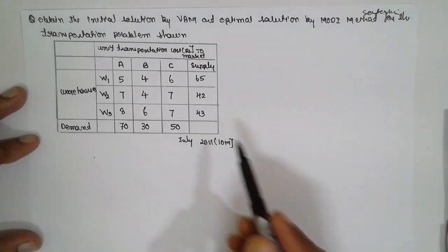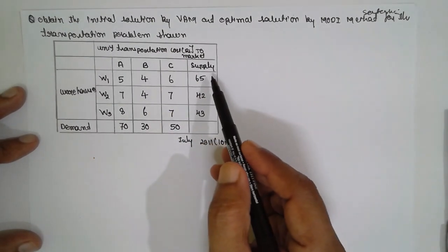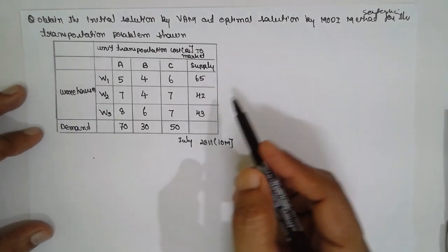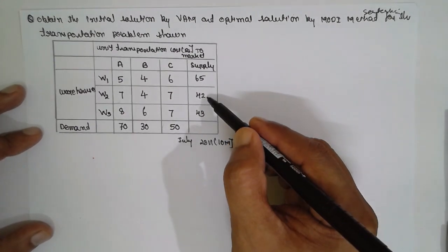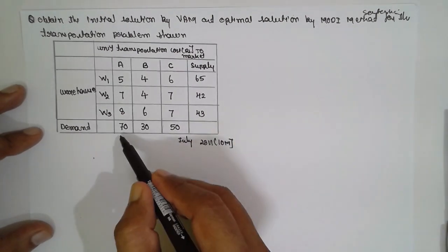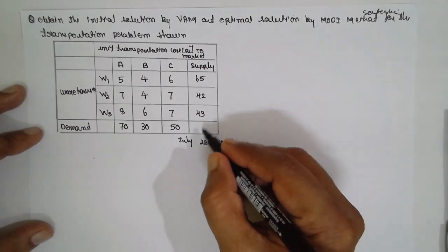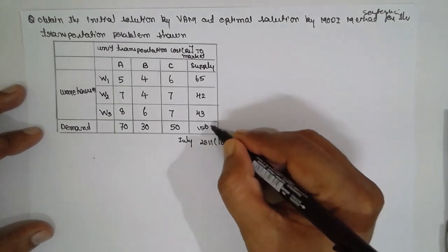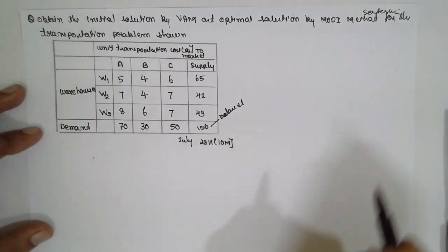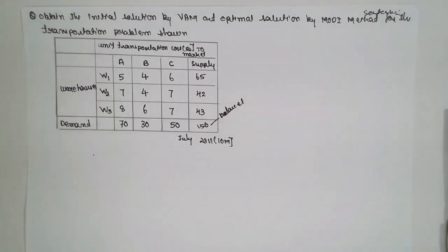This is the problem given. It includes cost, demand, and supply. First, we are going to check whether the system is balanced or not. The supply values are 65, 42, and 43, giving a total of 150. The demand values are 70, 30, and 50, also totaling 150. The system is balanced. Then you can solve the problem; otherwise, we would have to introduce a dummy variable based on the demand and supply.